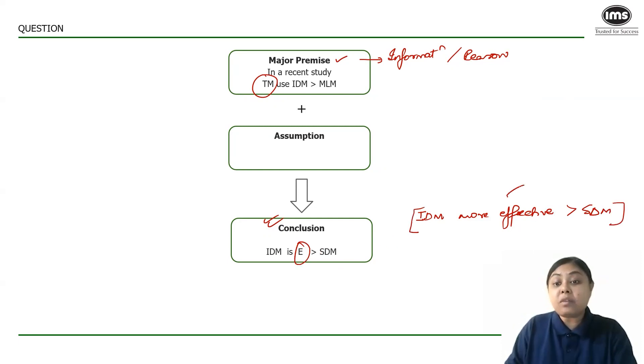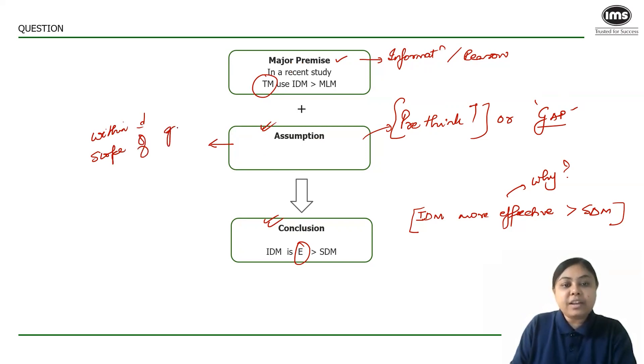The moment I read this in my mind there will be a question why is this a scenario? To answer this why, it is very important that the author must have had a pre-thinking in his brain before arriving at this conclusion. This pre-thinking or the gap between the major premise and the conclusion is typically called the assumption.